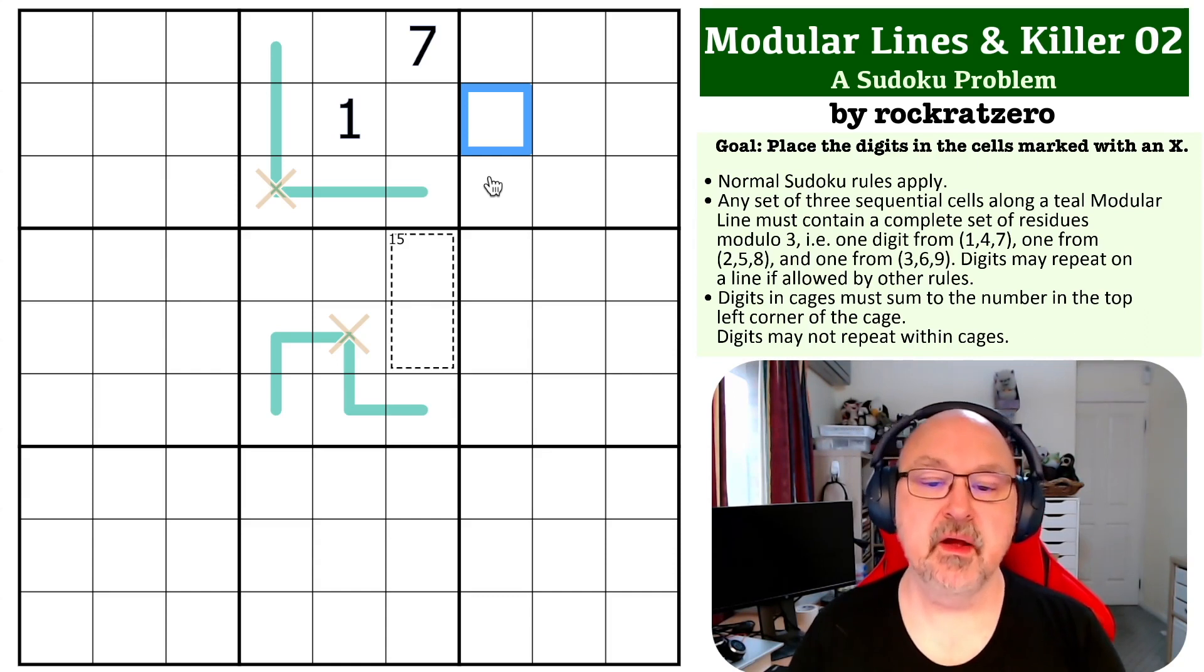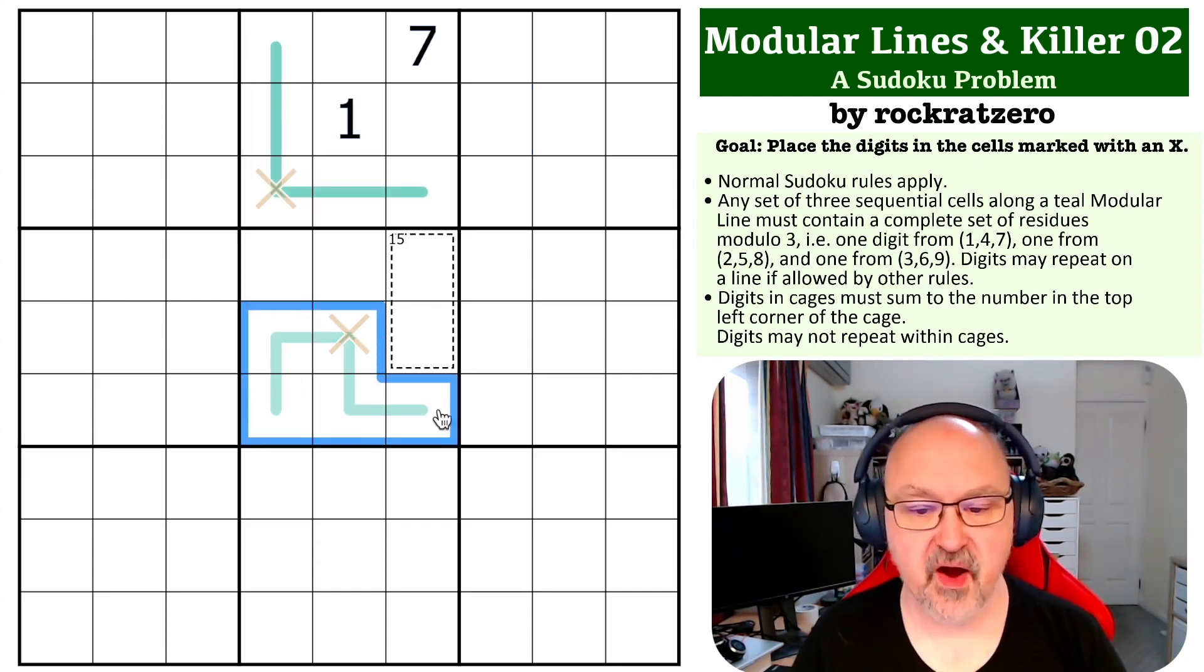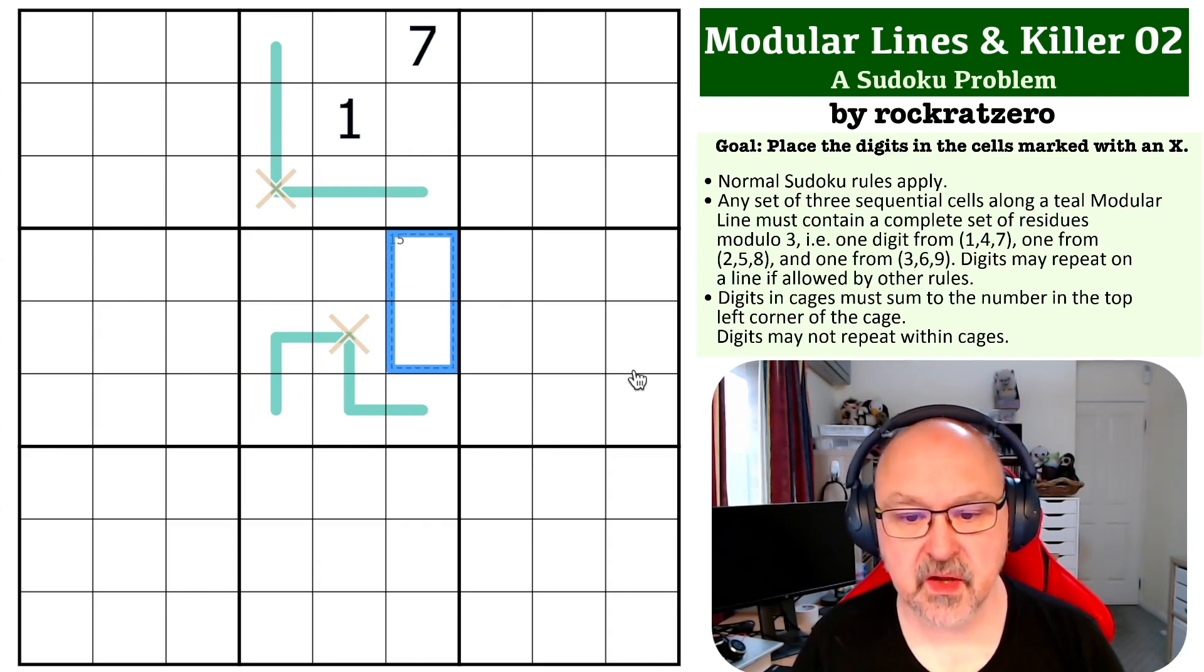Okay, so each of these boxes can pretty much be done independently. I'm going to start in box five because that's where normally the stuff is. In a 15 cage, this can either be a 6-9 or a 7-8, but there's a 7 looking at it, so this has to be a 6-9.